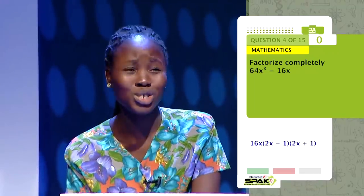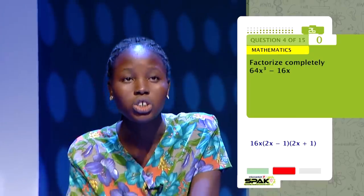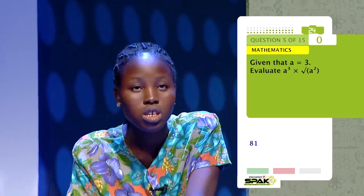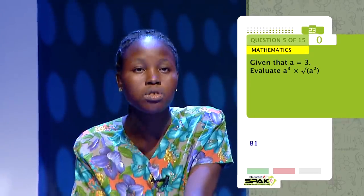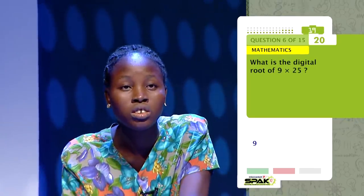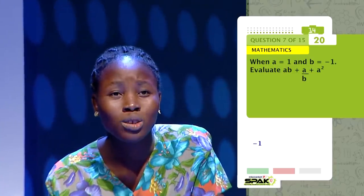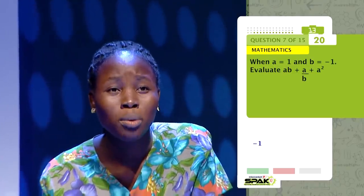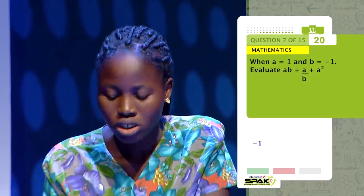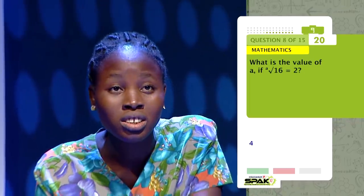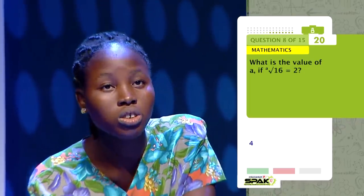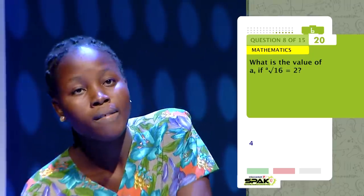16X equals X minus X plus 4. Given that A equals 3, evaluate A raised to the power of 3 multiplied by the square root of A squared. It's 1. What is the digital root of 9 multiplied by 15? When A equals 1 and B equals minus 1, evaluate AB plus A over B plus A squared. The answer is 2, then 1. What is the value of A if A root 16 equals 2? 4.